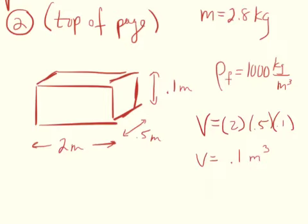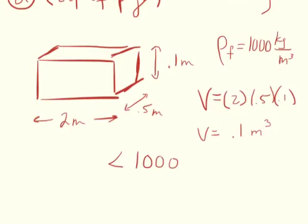Using an inequality, the density of the object has to be less than 1,000. That quantity would be the mass — 2.8 kilograms plus x — over the volume, 0.1. We want the density of the object to be less than the density of the fluid. That's our statement and our limitation. The density of the fluid is 1,000 — it's water — so we need the density of the object to be less than that so it'll float.